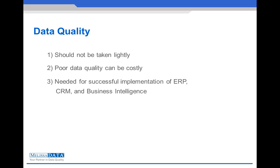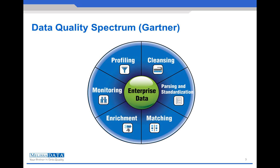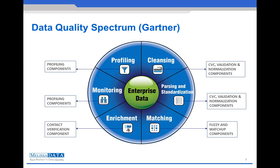The data quality spectrum as defined by Gartner is divided into six categories, starting with profiling, then cleansing, parsing and standardization, matching, enrichment, and monitoring. What we at MelissaData have accomplished is the development of custom SSIS transforms, called the data quality components, in order to satisfy all the areas of data quality.